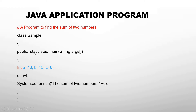After the main method header, we have opening brackets for the class and for the main method. Inside, we have declared variables a, b, and c. There are three variables assigned values 10, 15, and 0. 'int' is the data type. Then c equals a plus b, and to print the value of c we use System.out.println, which we will discuss in coming chapters.